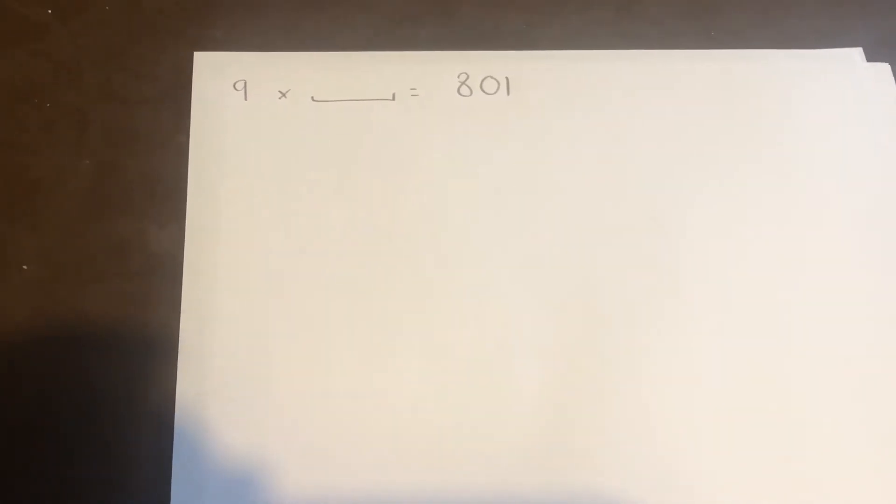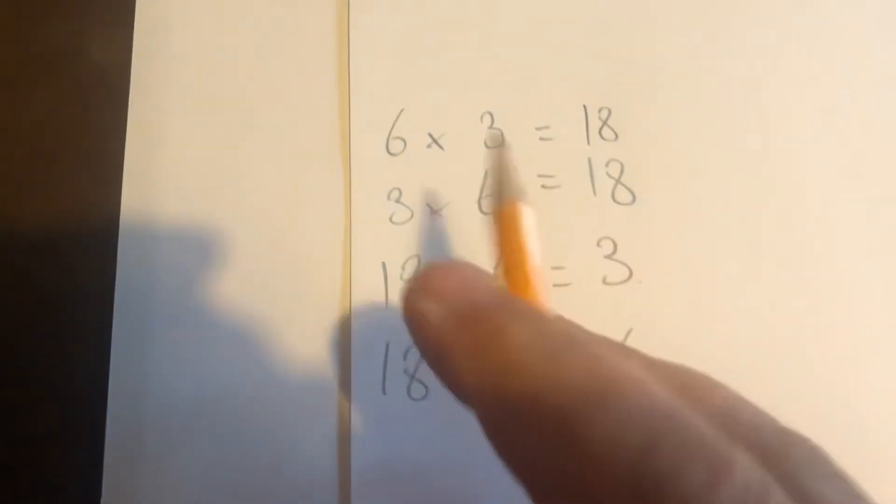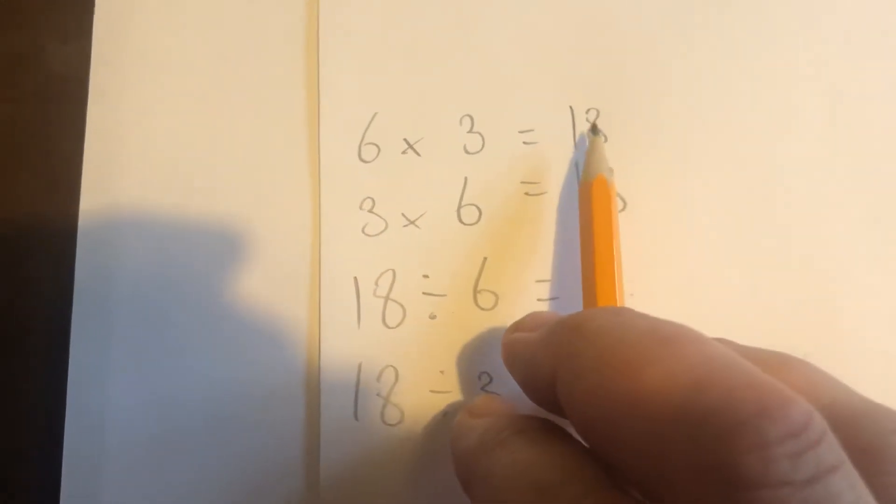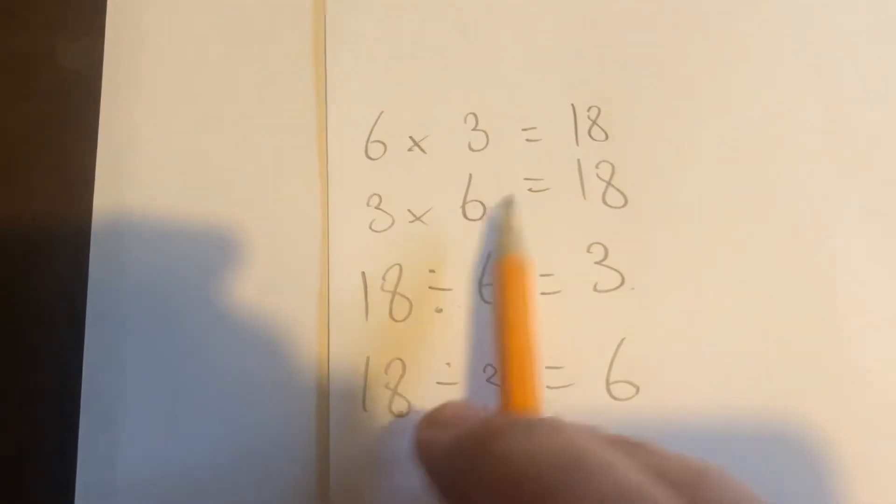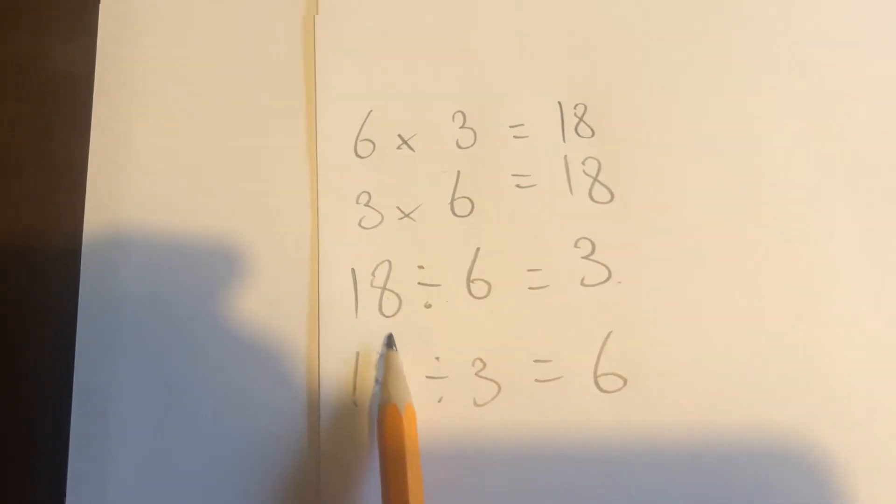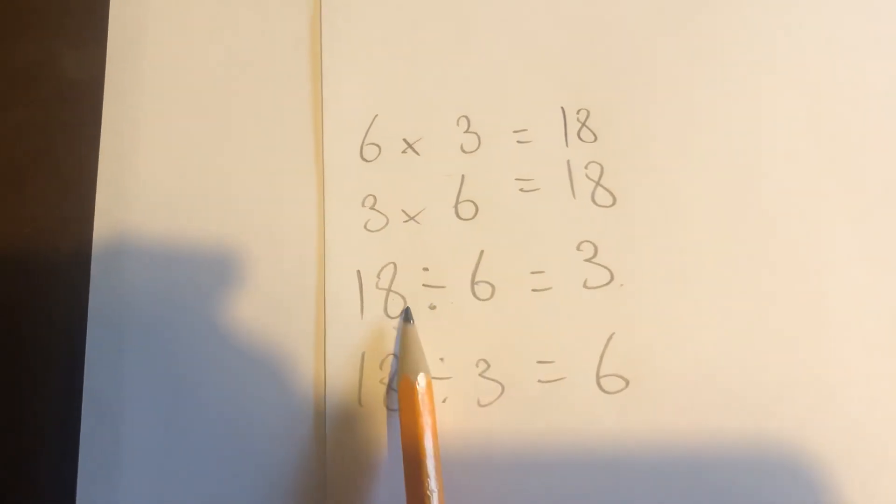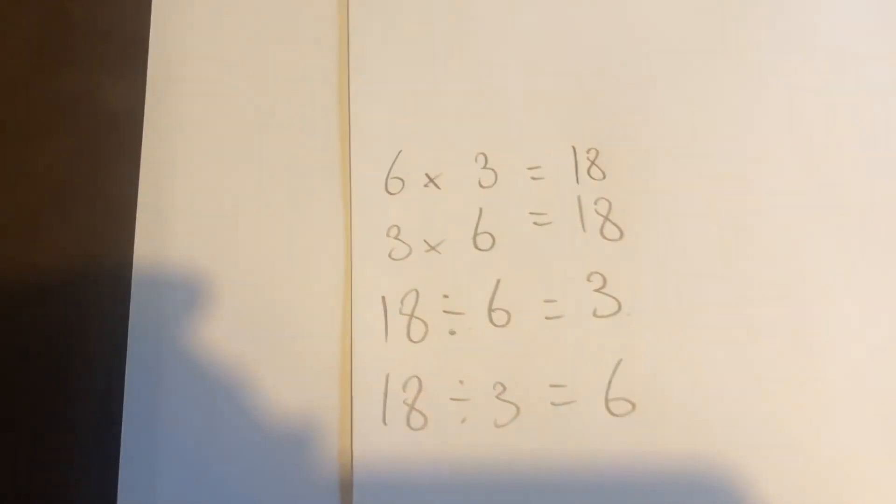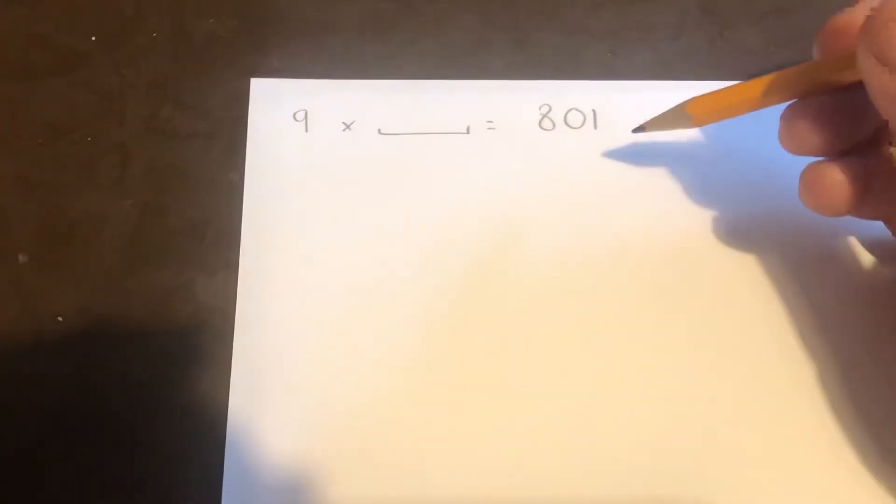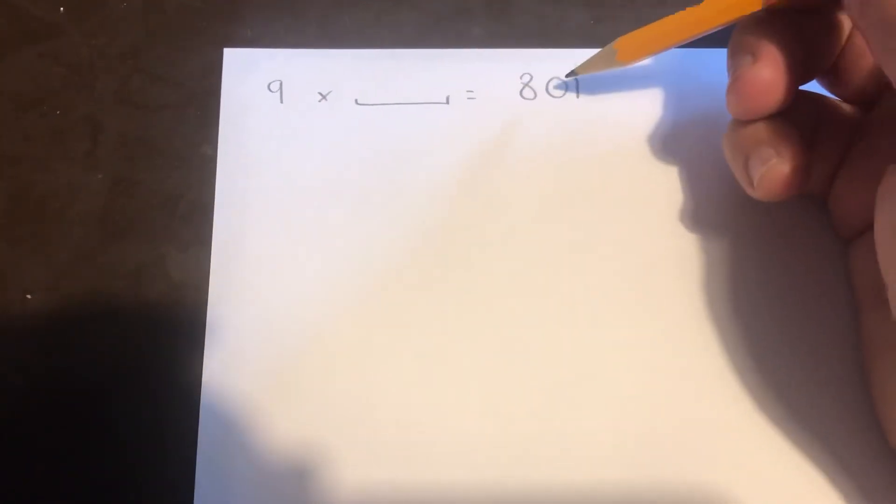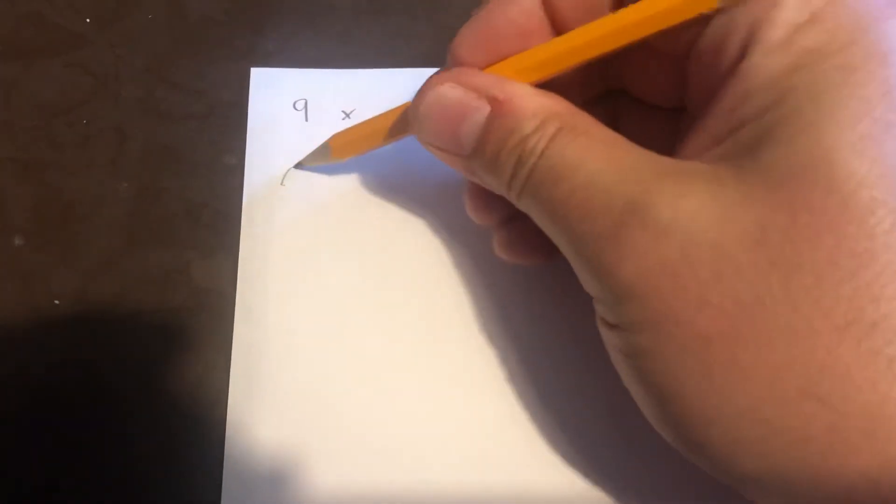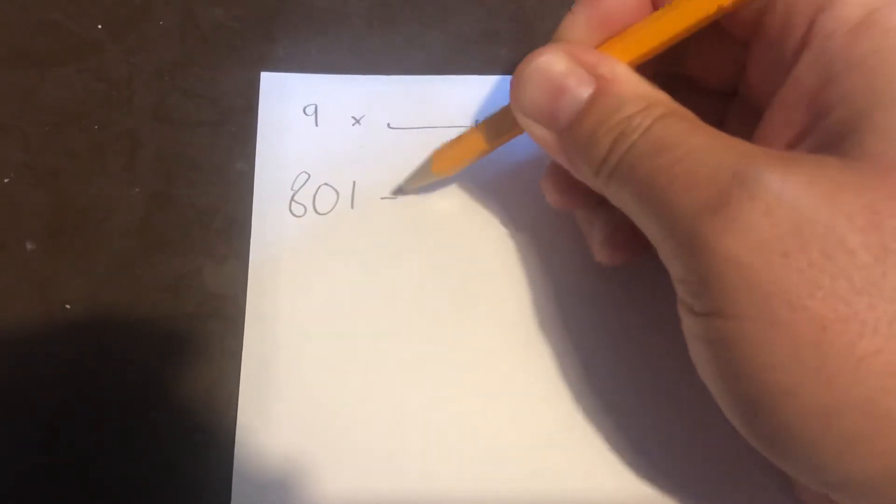And the final type of question is this one: 9 times something is 801. If I go back to my originals, I've got 6 times 3 is 18. I've got this one missing, I can write that as this division here: 18 divided by 6 is 3, and that's what I'm trying to do. So I'm going to turn this question into a divide: 9 times something is 801. I'm going to use the inverse.